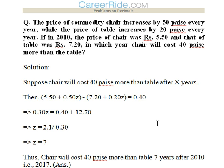Suppose chair will cost 40 paise more than table after Z years. So 5.50 + 0.50 × Z, that is 0.50 increase for Z times in Z years. 7.20 + 0.20 increase in Z years. So the difference would be 0.40.